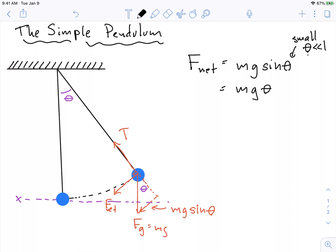So to state that, we're gonna say F net is actually approximately equal to Fx, just the force in the x direction. And this is equal to mg theta.